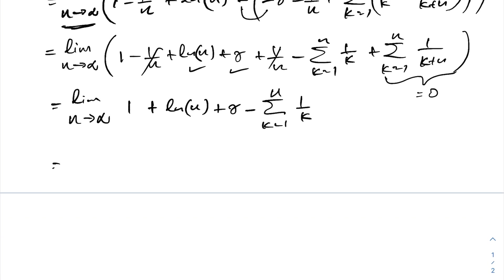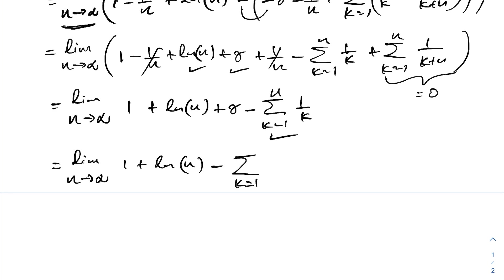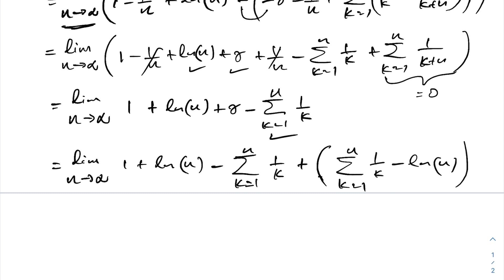As a final step, we have the limit as n approaches infinity of 1 plus natural log of n minus the sum from k equals 1 to n of 1 over k plus Euler's Mascheroni constant. By the definition of Euler's Mascheroni constant, the sum from k equals 1 to n of 1 over k minus natural log of n approaches the Euler-Mascheroni constant as n goes to infinity. So natural log of n and the sum of 1 over k cancel, leaving us with 1. The answer is 1. If you like this type of video, please subscribe to the channel. Thank you for watching.